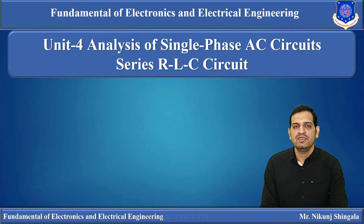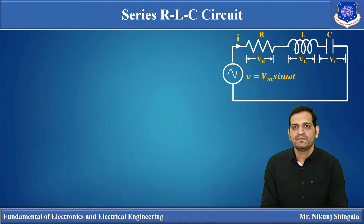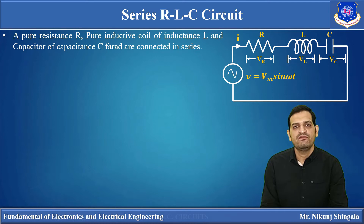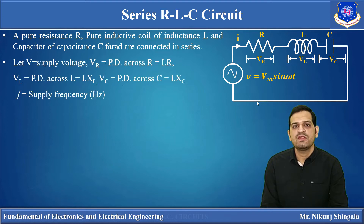So let us start with the series circuit which consists of a resistor, capacitor, and inductor. Here you can see one resistor, one pure inductor, and one pure capacitor are connected in series. The resistor has value R, an inductive coil of inductance L, and a capacitor of capacitance C Farads are connected in series. Across this series combination one instantaneous voltage source Vm sin(ωt) — an AC source — is connected.